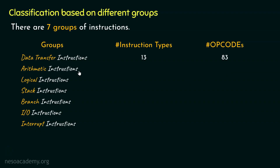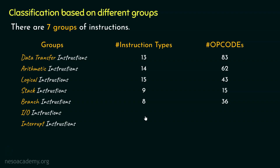For the arithmetic group there are 14 different types and cumulatively 62 op codes. For logical instructions there are 15 types and 43 op codes. Stack instructions have 9 types and 15 op codes. Branch instructions have 8 types and 36 op codes. Input/output instructions have 2 types and 2 op codes — one op code per type. Interrupt instructions have 5 types and 5 op codes.